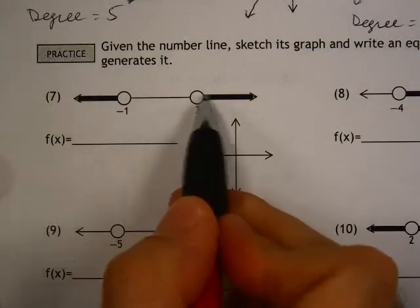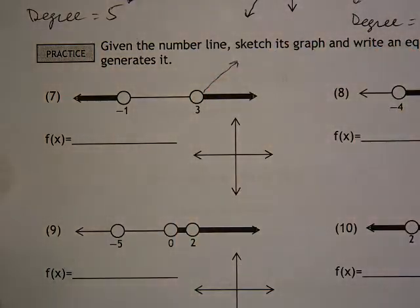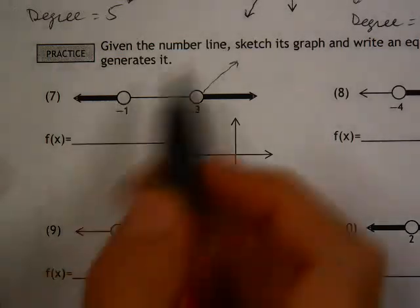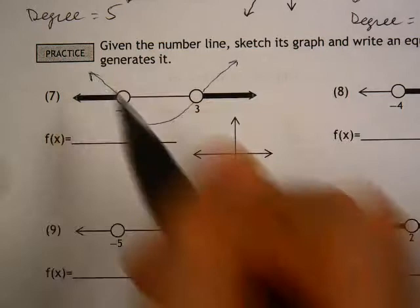So if you remember with the number line, remember that with the shading, that meant that the line from the graph was above your number line. And there's no shading here, so that means it's going below here. Shading means we're going above again.